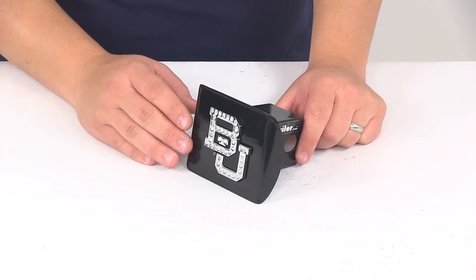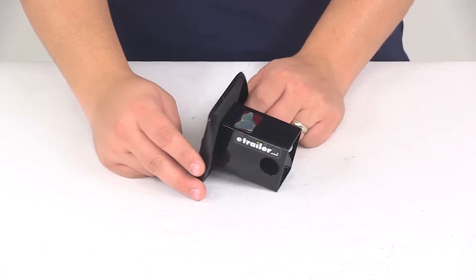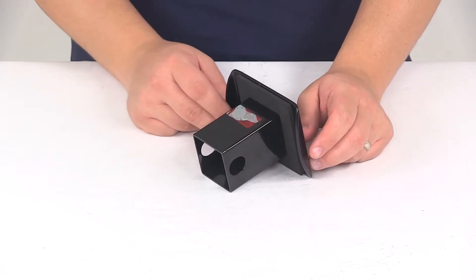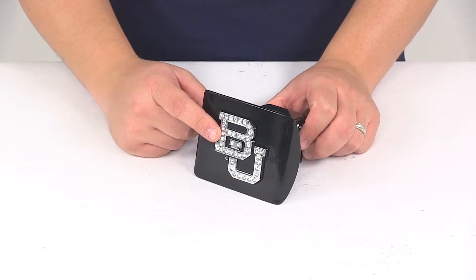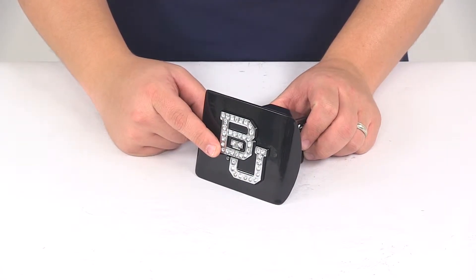The hitch cover is made from steel construction with a black powder coat finish. It resists rust and corrosion really well, and here on the front we have the crystal embedded chrome plated Baylor University emblem.